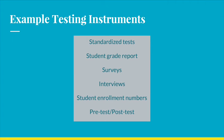Data can be collected through multiple sources using testing instruments. It is important that the testing instrument used accurately demonstrates the result of the independent variable being implemented on the sample group. Some examples of testing instruments are standardized tests, student grade reports, surveys, interviews, student enrollment numbers, and the pre-test/post-test combination. If there is ever a question about what testing instrument was used, most authors can be contacted for more information.